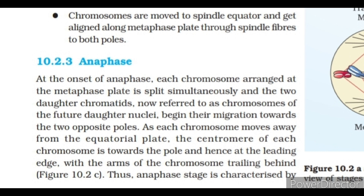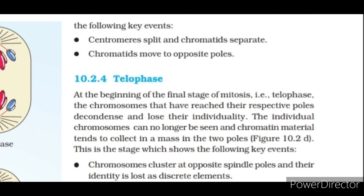At the onset of anaphase, each chromosome arranged at the metaphase plate is split simultaneously and the two daughter chromatids, now referred to as chromosomes of the future daughter nuclei, begin their migration towards the two opposite poles. As each chromosome moves away from the equatorial plate, the centromere of each chromosome is towards the pole and hence at the leading edge, with the arms of the chromosome trailing behind. Anaphase stage is characterized by: centromeres splitting and chromatids separating, and chromatids moving to opposite poles.